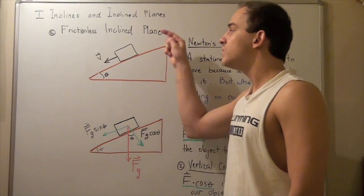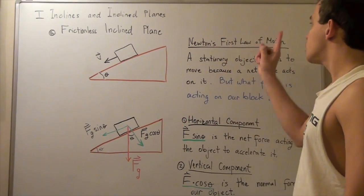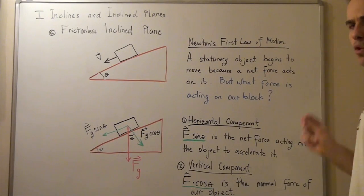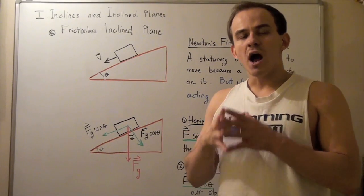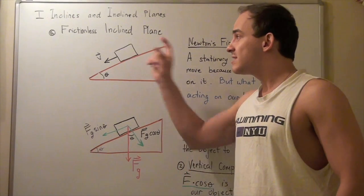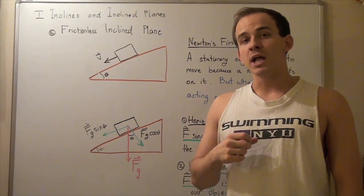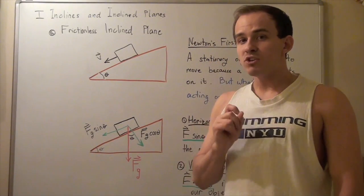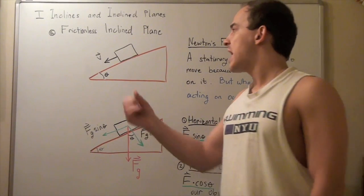Our block begins to move downward with some velocity v. Let's recall what Newton's first law of motion tells us. According to Newton's first law, a stationary object begins to move because a net force acts on that object — a stationary object will not move unless there's a net force acting on it. Because this block begins to accelerate down the inclined plane, some net force is acting on that object. But the question is: what is this net force, and what pulls our object downward?